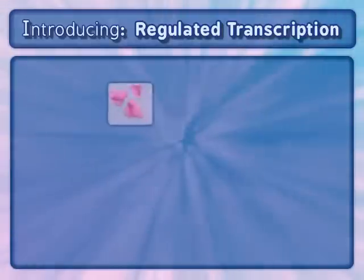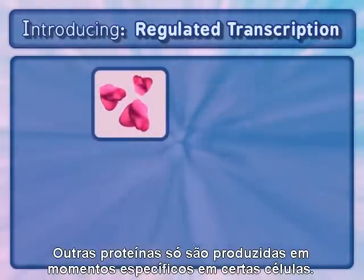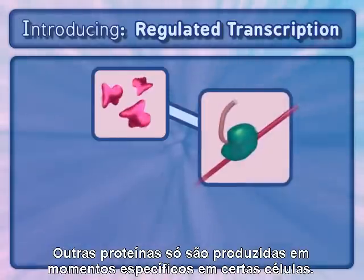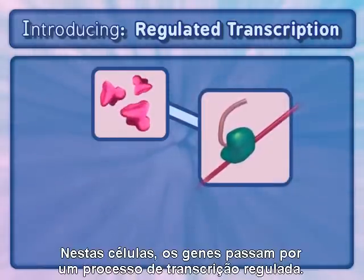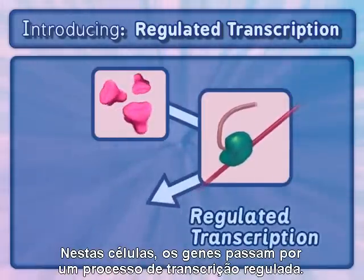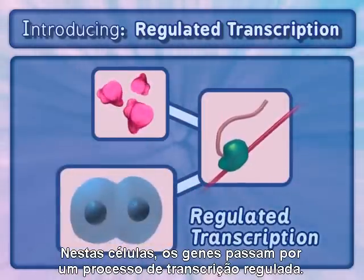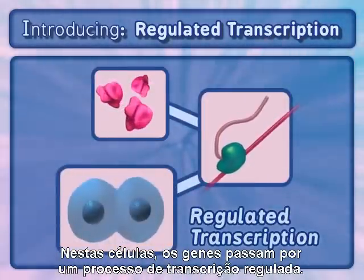Other proteins are only produced at specific times in certain cells. In these cells, genes undergo a process called regulated transcription.